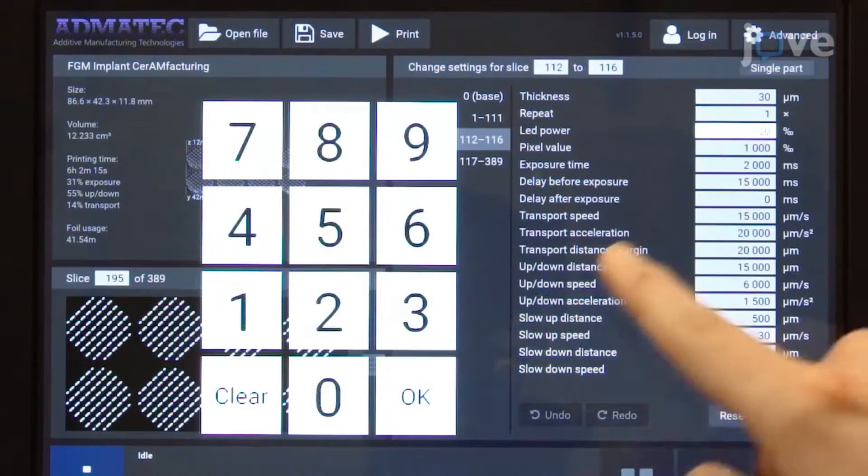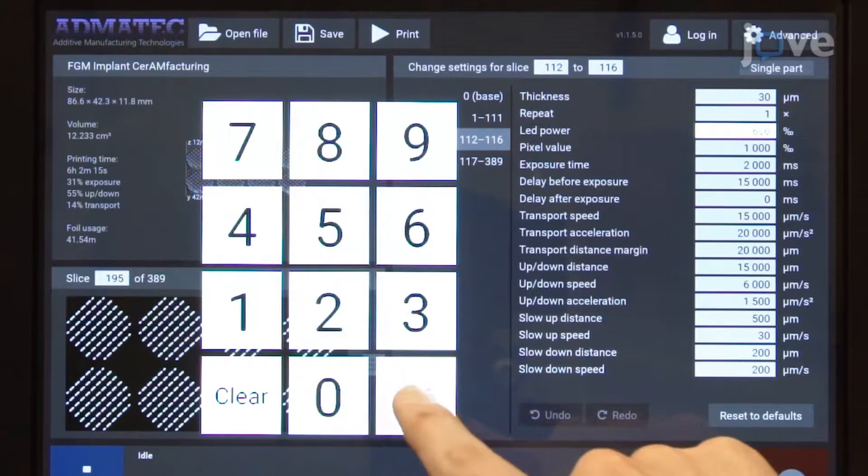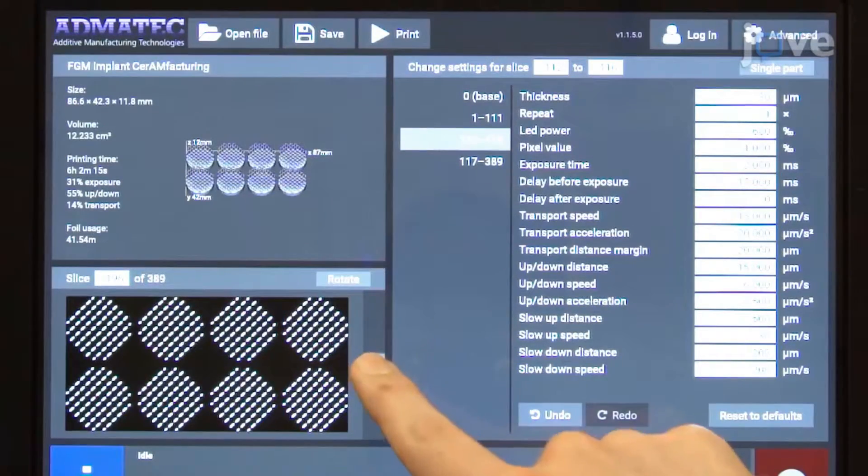Create a printing program and set the curing time per layer, casting speed, building platform speed, and other parameters.